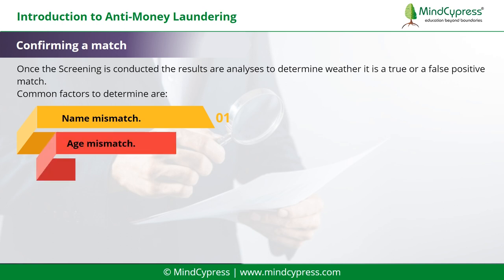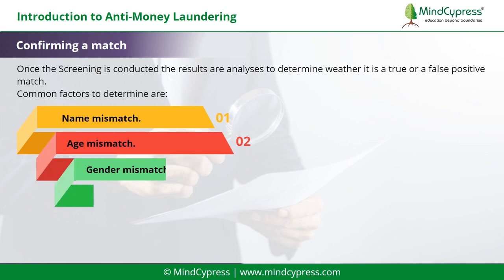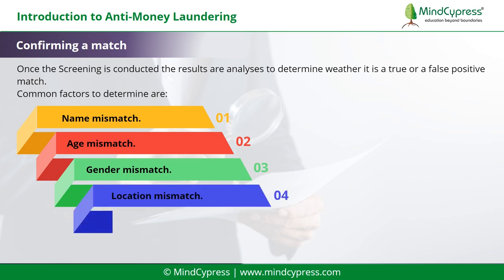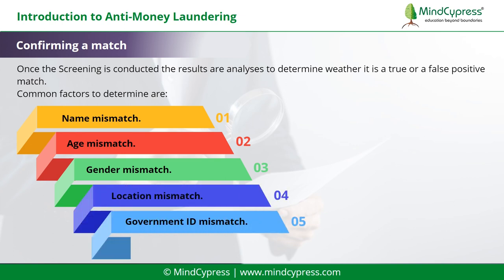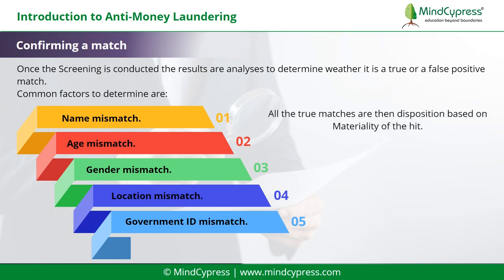2. Age mismatch. 3. Gender mismatch. 4. Location mismatch. 5. Government ID mismatch. All true matches are then dispositioned based on materiality of the hit.